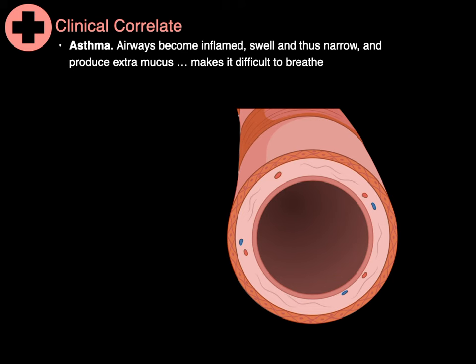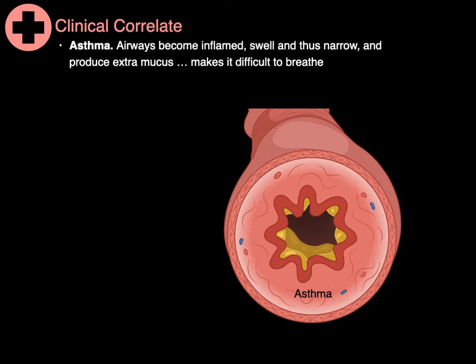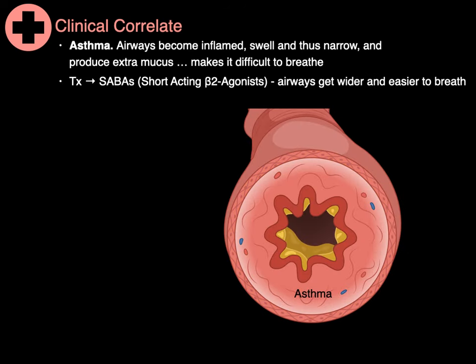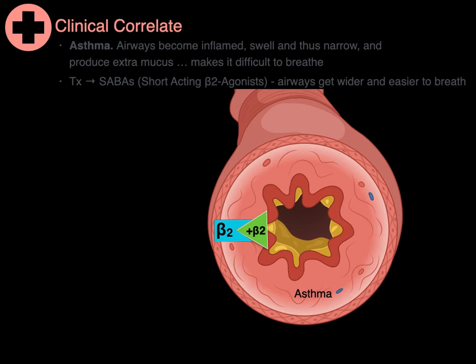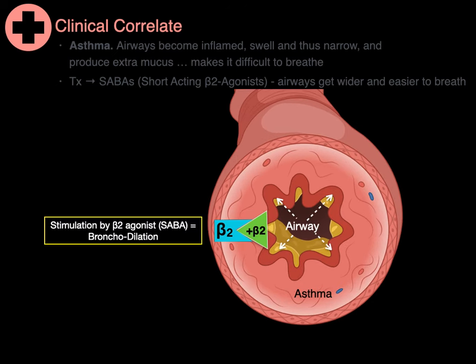On another note, asthma is a condition where the airways become inflamed, they swell, you get bronchoconstriction — they narrow — and you have production of extra mucus, making it very difficult to breathe. A treatment is short-acting beta-2 agonists, which make the airways wider and easier to breathe. Using an inhaler, you inhale these beta-2 agonists into the airways, they bind to the beta-2 receptor, and you get airway dilation — stimulation by these beta-2 agonists causes bronchodilation to make breathing easier.